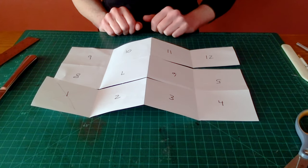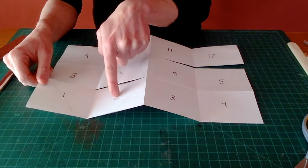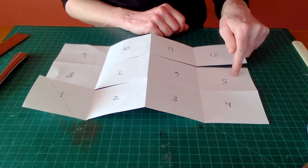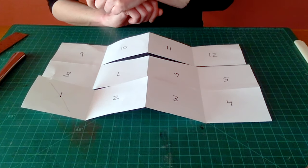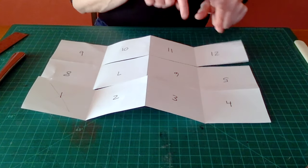Your page numbering will start at the bottom left with pages one, two, three, four. Then we flip our pages upside down for five, six, seven, eight, and flip them right side up again for pages nine, ten, eleven, twelve.